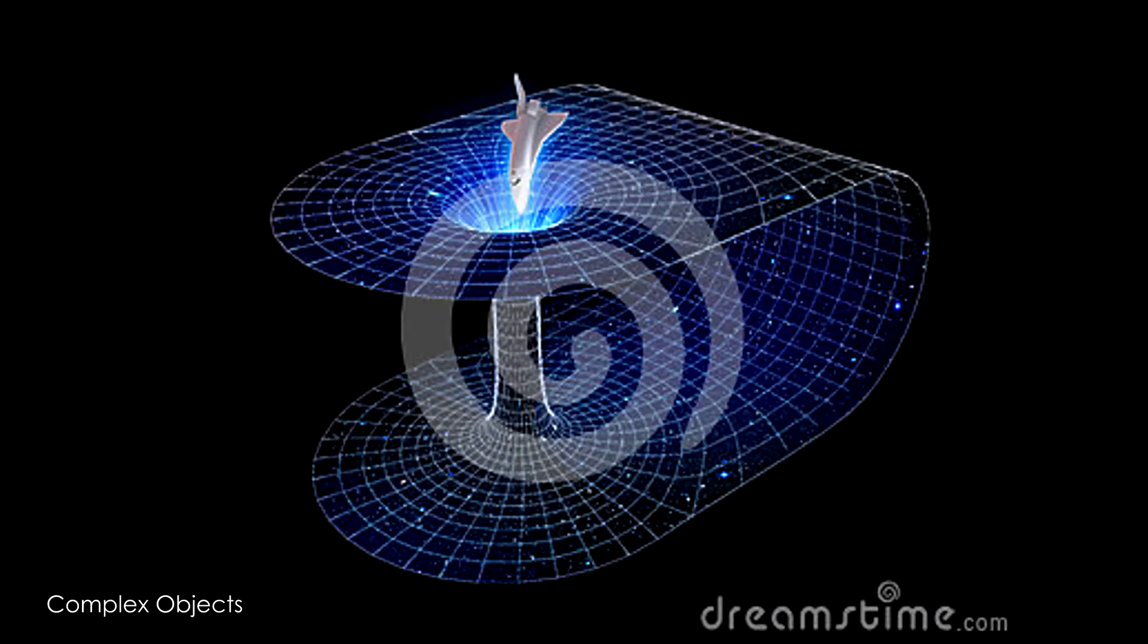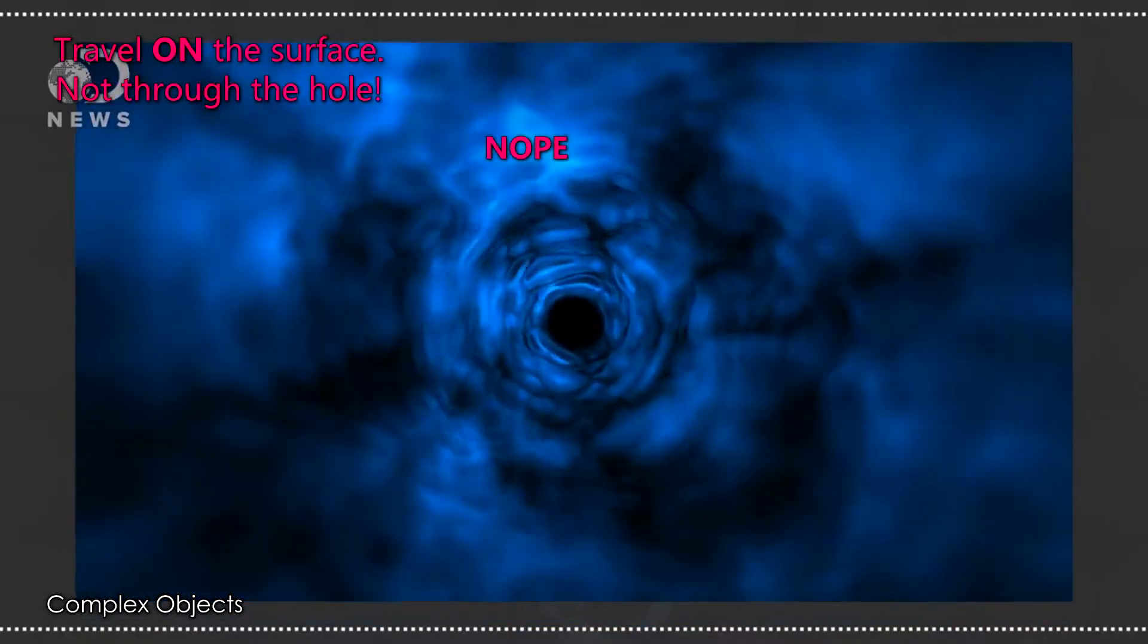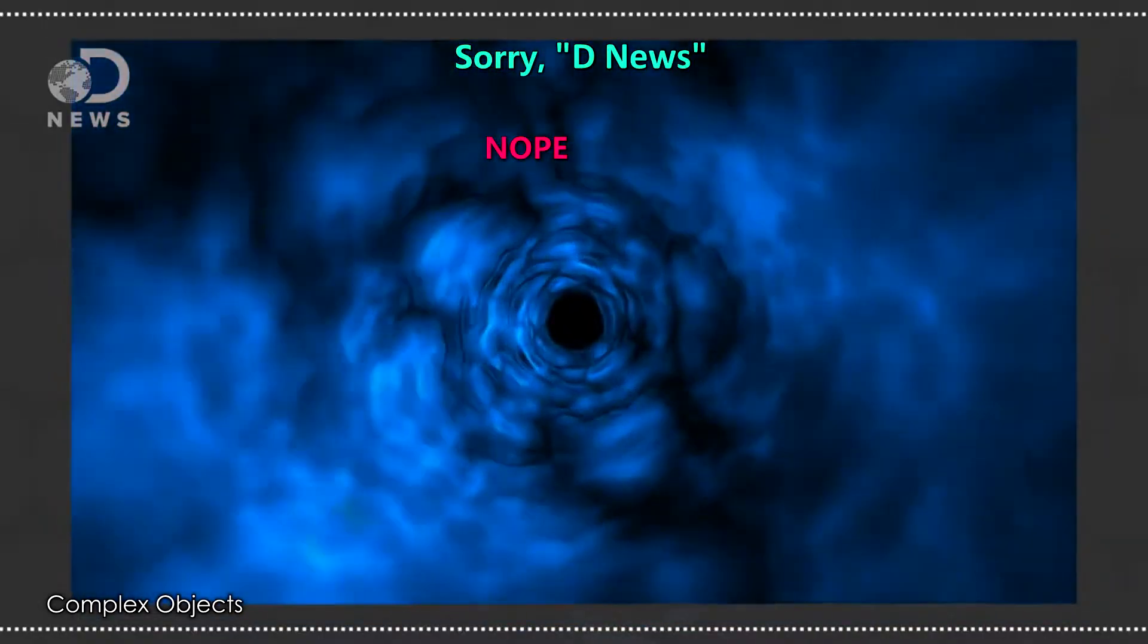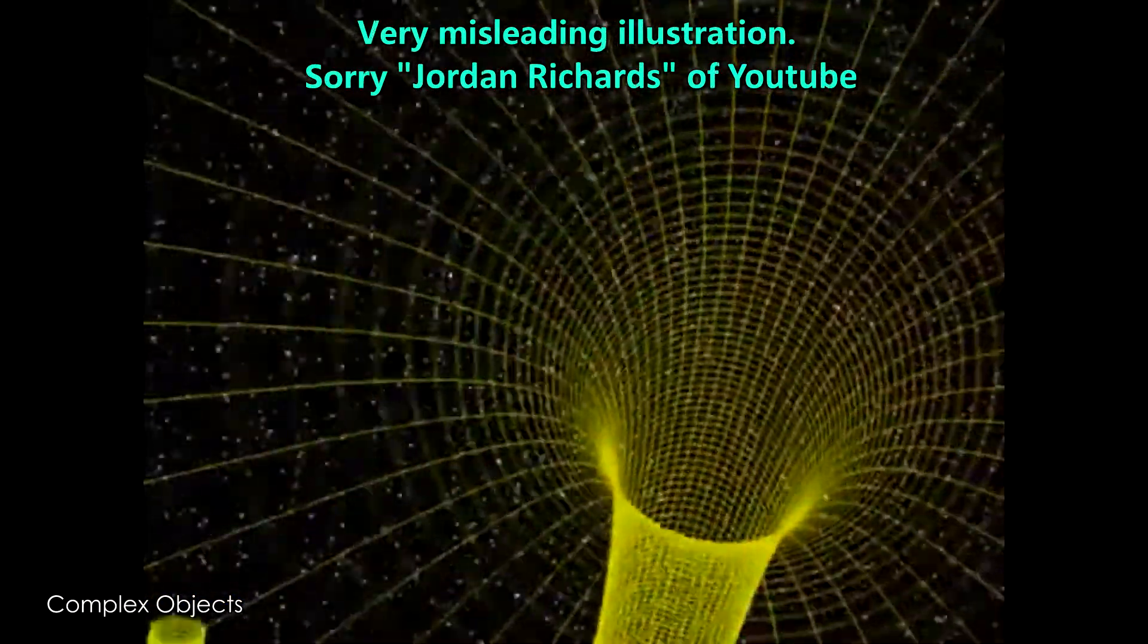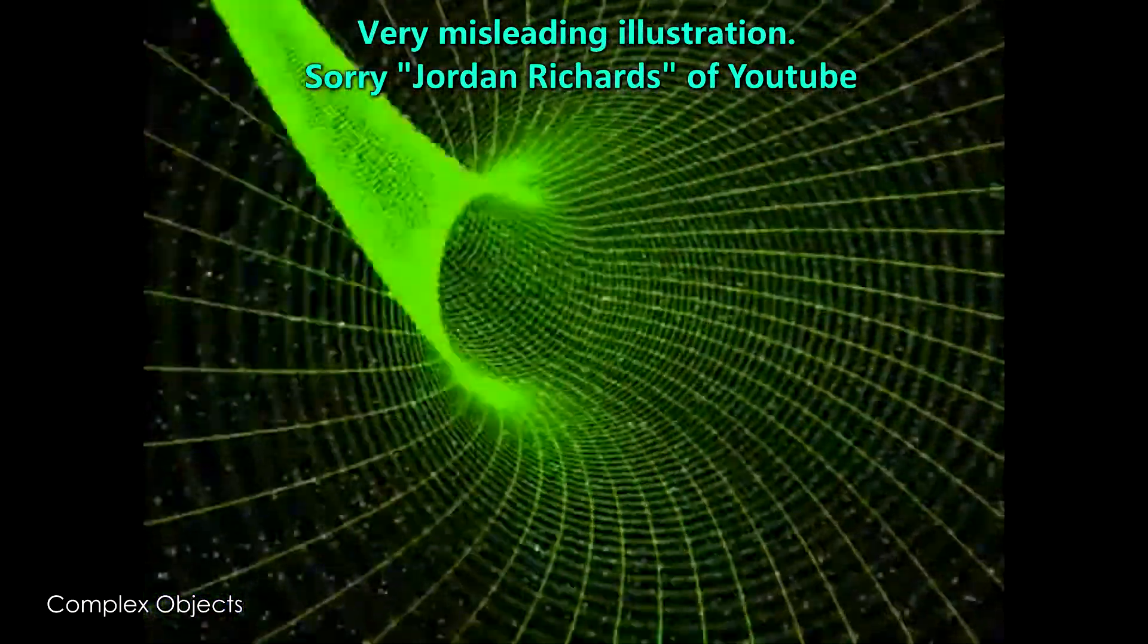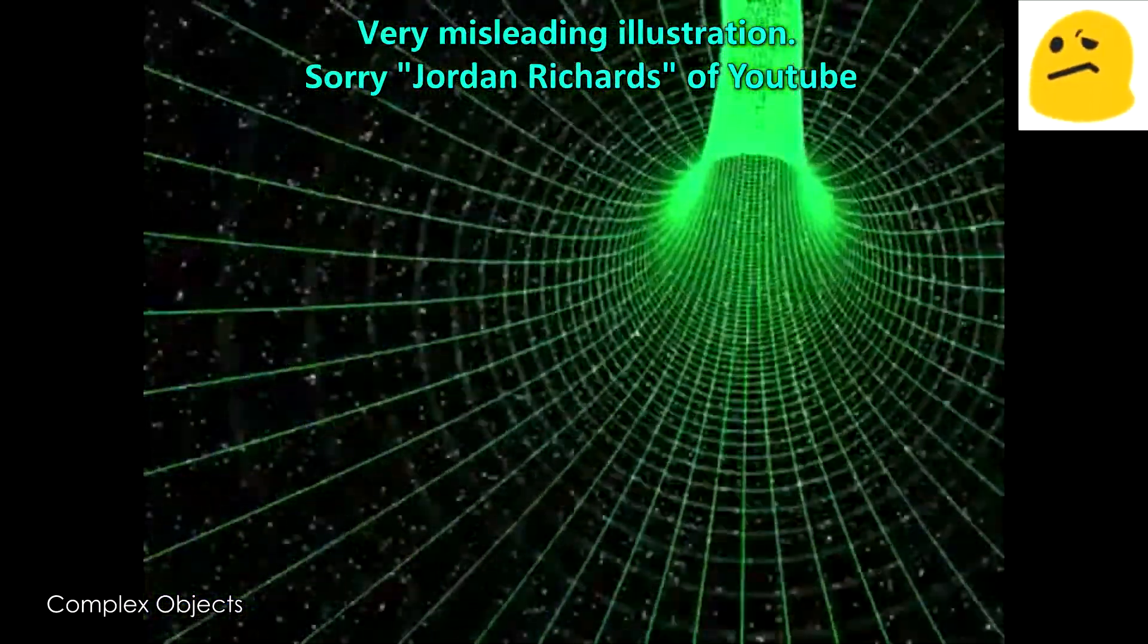You may have seen some of these cutesy depictions of wormholes, where our three-dimensional space is represented by this surface, which is curved through another dimension and can thereby connect to distant points on the surface. Something always bothered me about this kind of illustration, because there's no way a real, even theoretical wormhole could look like this if you encountered it, because what's this tunnel made out of?